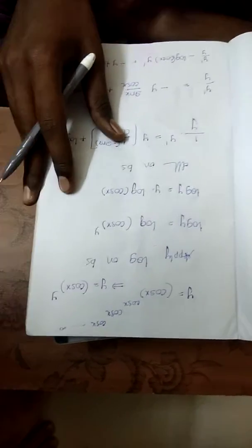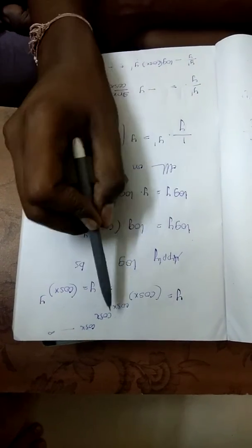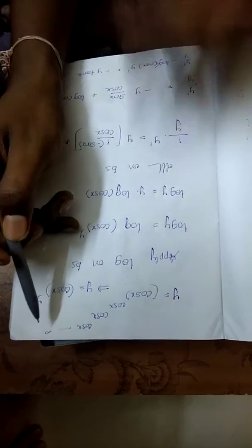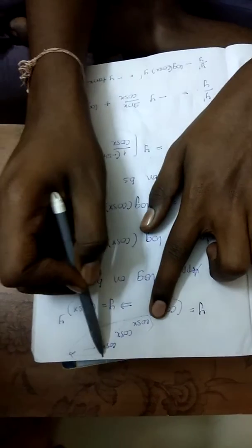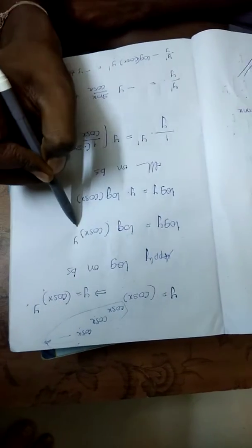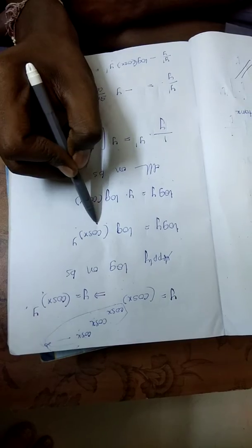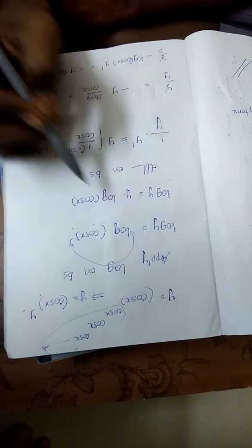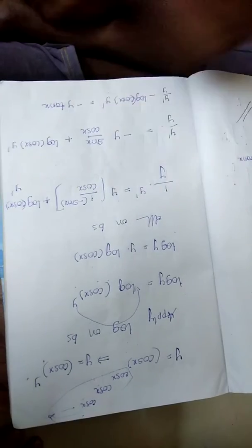This question must come in the exam. Next: y is equal to cos x power cos x power cos x and so on to infinity. Since cos x repeats, y is equal to cos x power y. Applying log on both sides: log y is equal to log of cos x to the power y, which gives log y equals y log cos x. Now differentiating both sides.